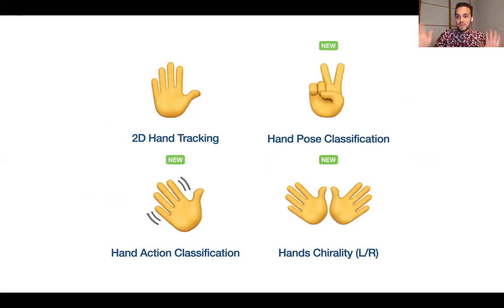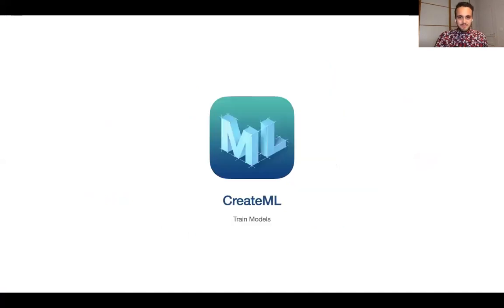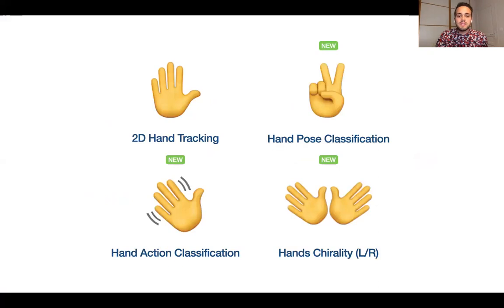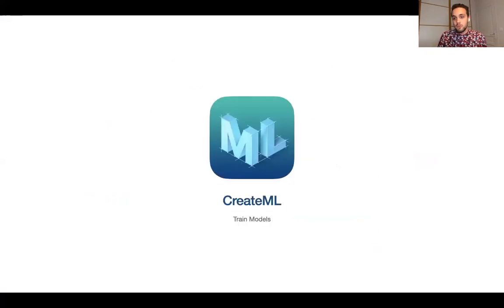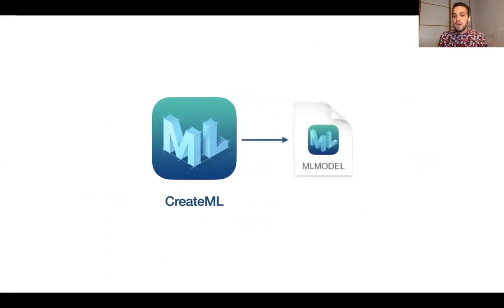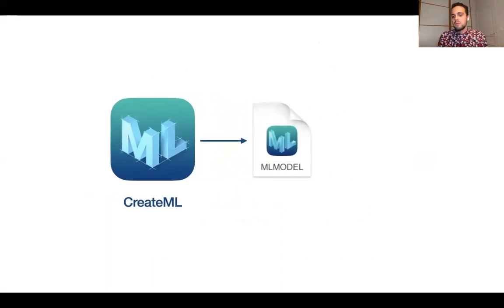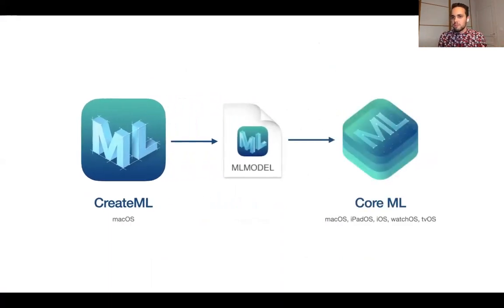Chirality is very useful because you can trigger different actions depending on which hand is used. The hand pose classification and hand action classification are both possible with CreateML, a tool that allows you to train your own ML models. You create your model in CreateML and then run it on device with CoreML. It's compatible with macOS, iPadOS, iOS, watchOS, and tvOS.